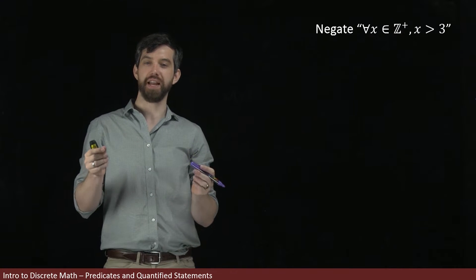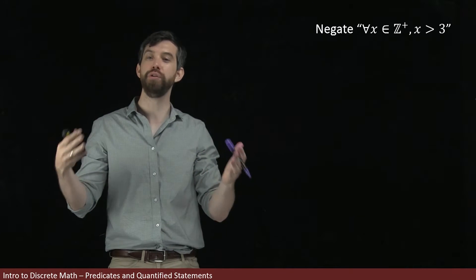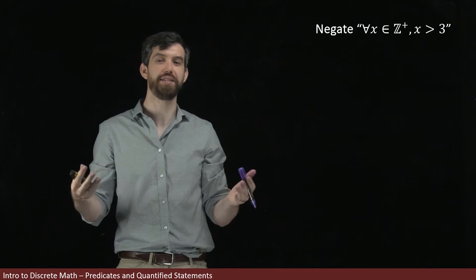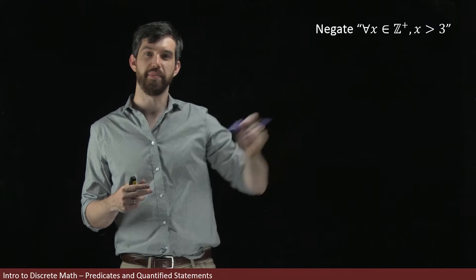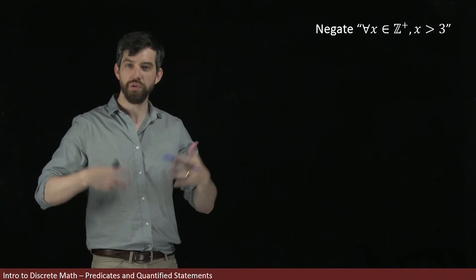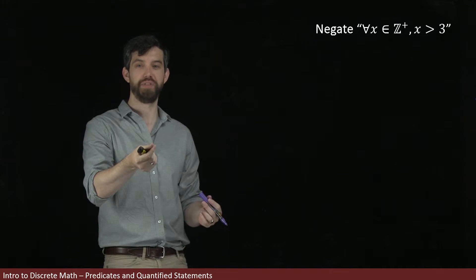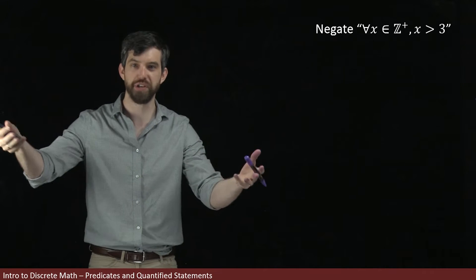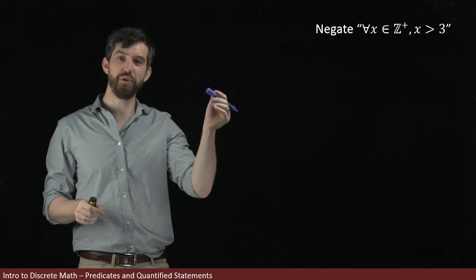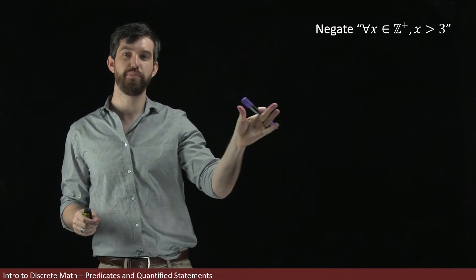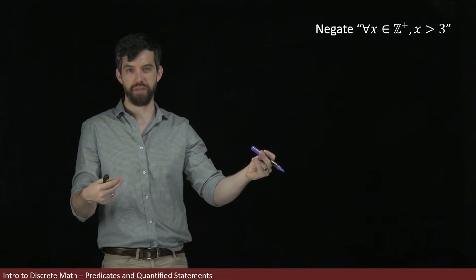In this video, we're going to investigate how to negate either a universal quantifier or an existential quantifier. Consider this particular mathematical statement. We have a universal quantifier at the front: for all x in the positive integers — so every positive integer you can imagine — x is going to be greater than 3. That's my predicate. So if it's a positive integer, then it's going to be greater than 3.